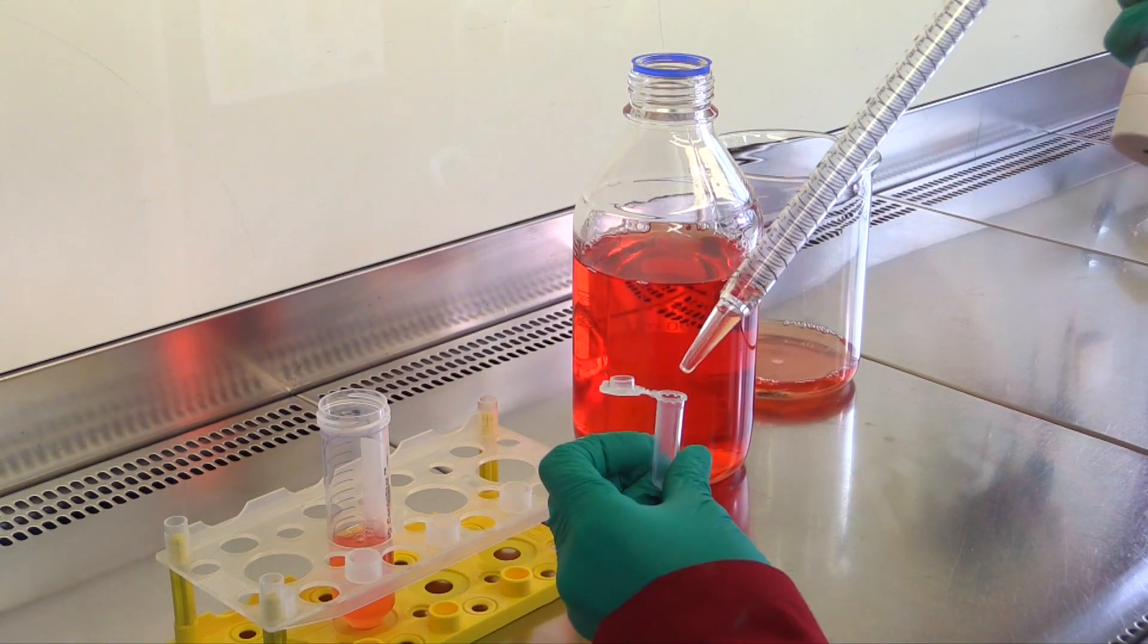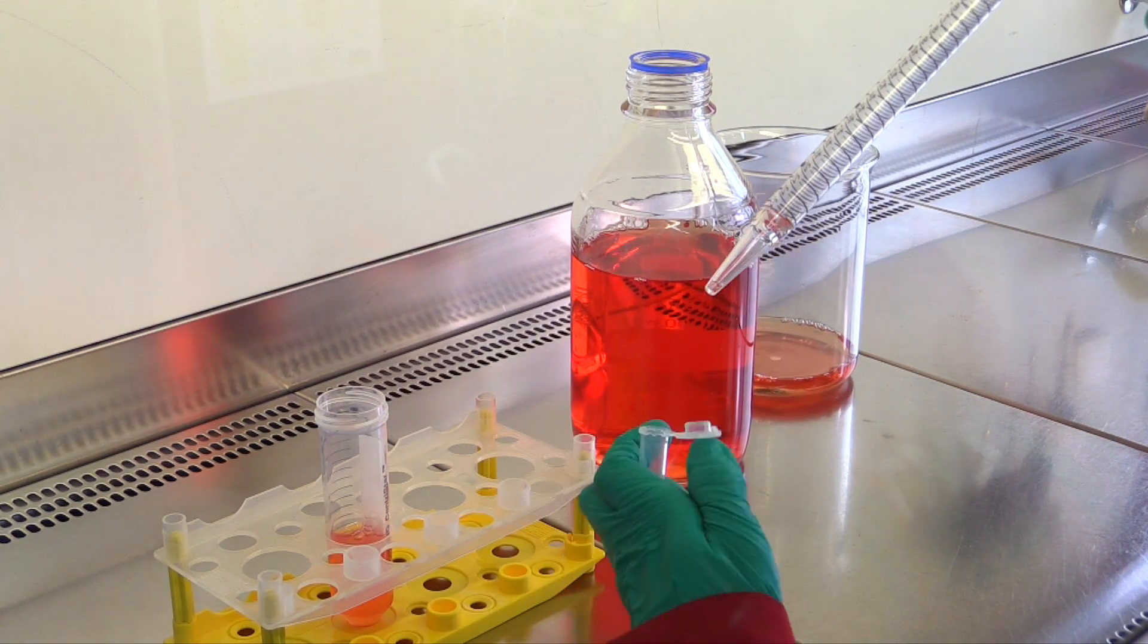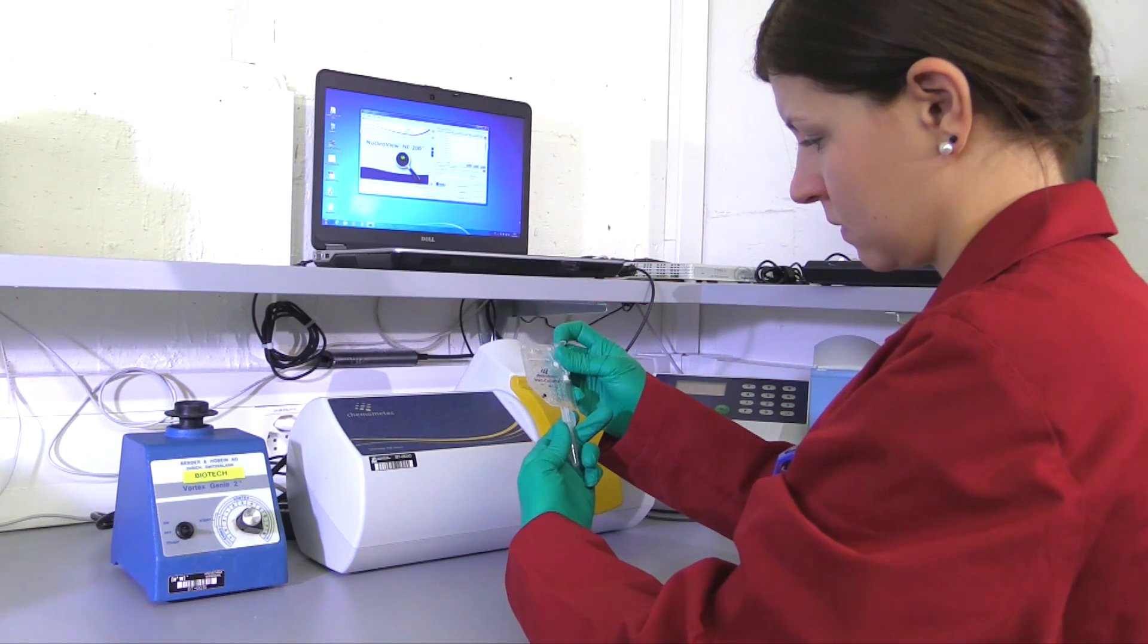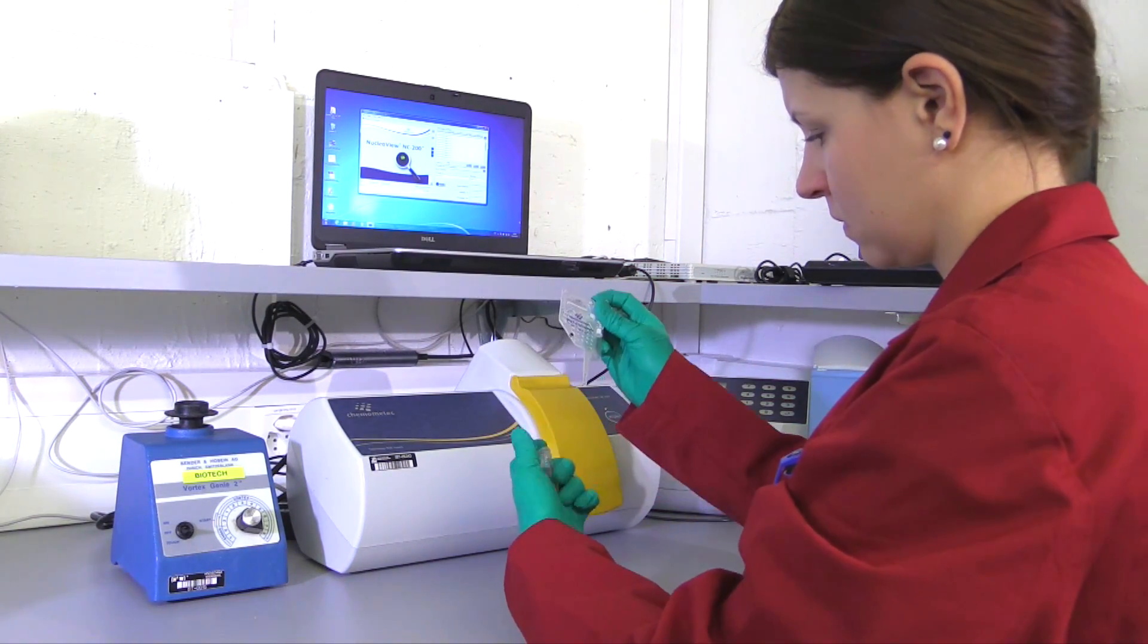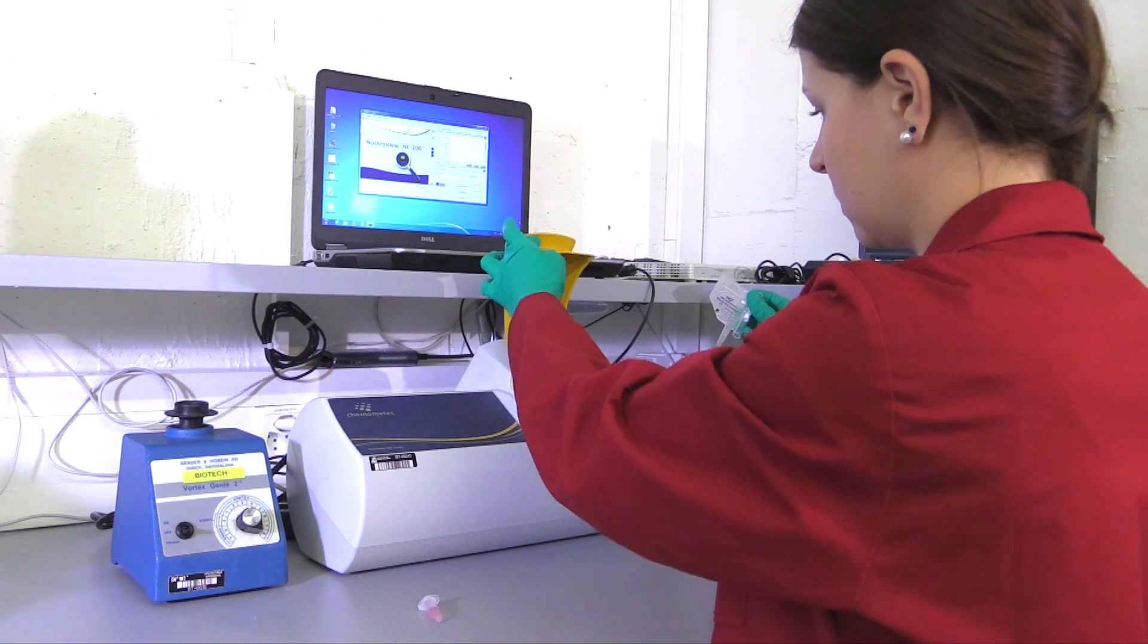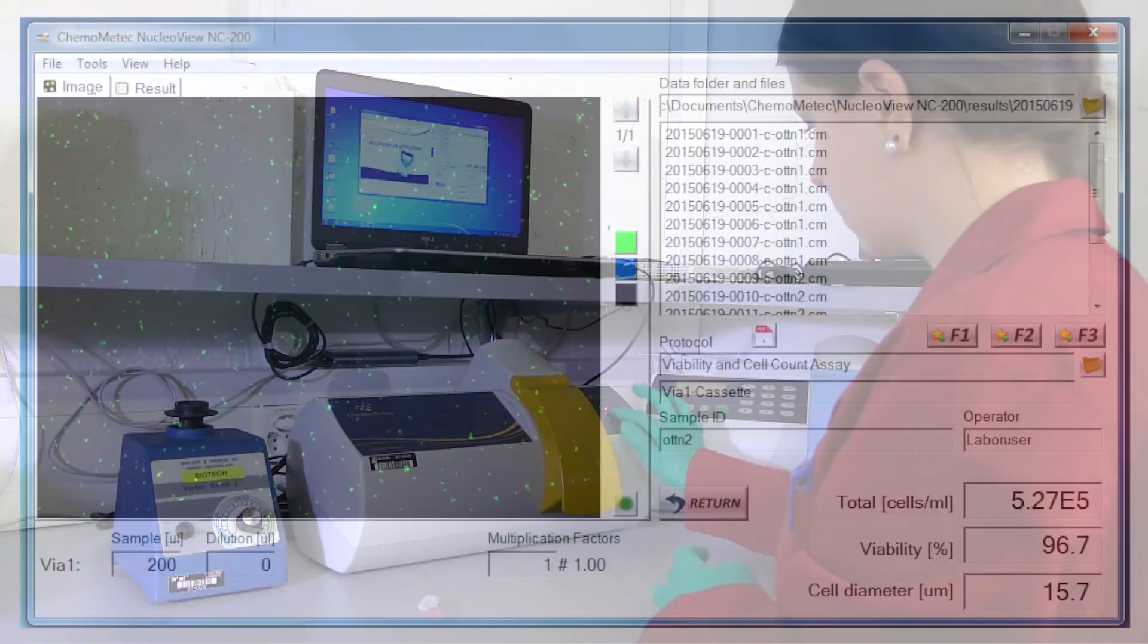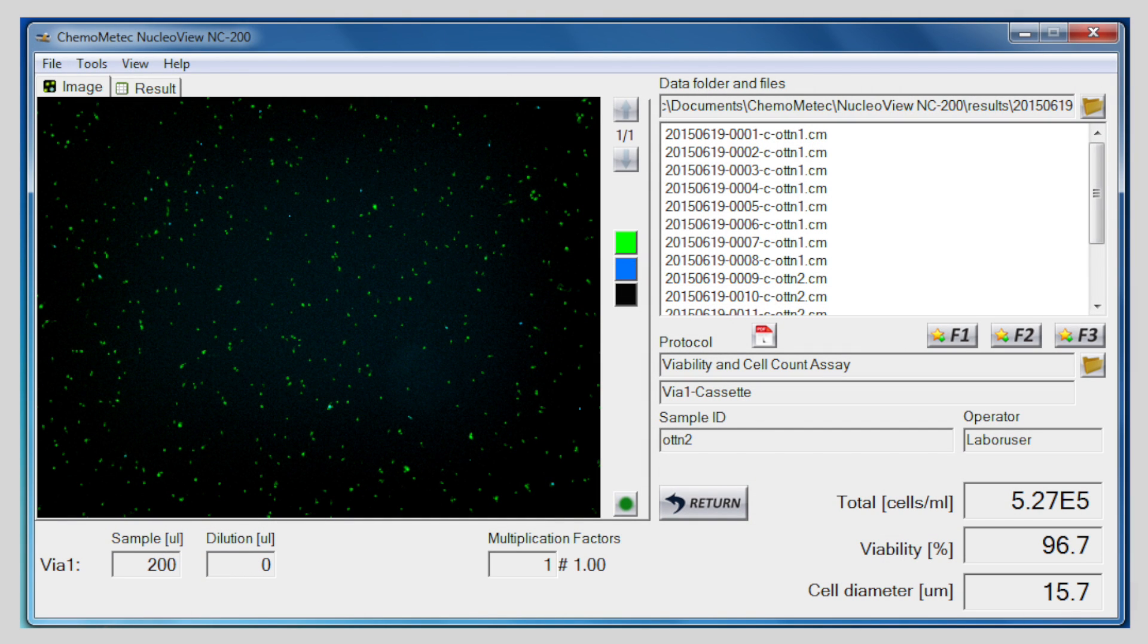Density and viability are determined using the cell-counting device Nucleocounter. Inoculation volume is also calculated. It is essential to have around 3 times 10 to the power of 3 cells per square centimeter of carrier surface and cell viability above 95% to achieve the cell growth target.